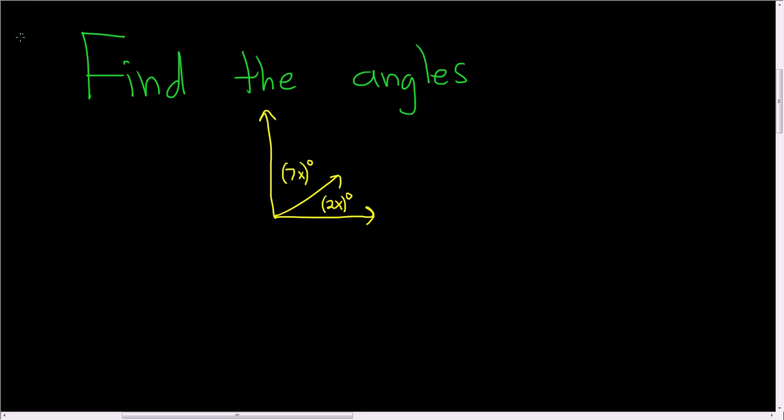In this problem we have a picture and we have two angles and we're asked to find the angles. Here we have a 90 degree angle. So these are called complementary angles.